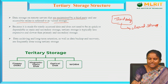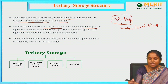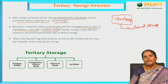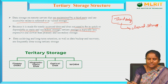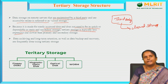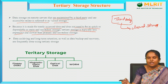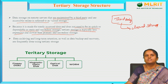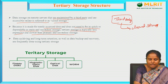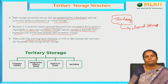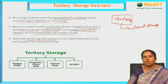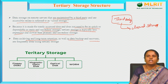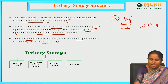Tertiary storage is made for rarely accessed data and does not need to be as quick or dependable as primary and secondary storage. It is typically less expensive and slower. It is used for data archiving, long-term retention, as well as data backup and recovery — keeping data safe so it can be recovered when needed.